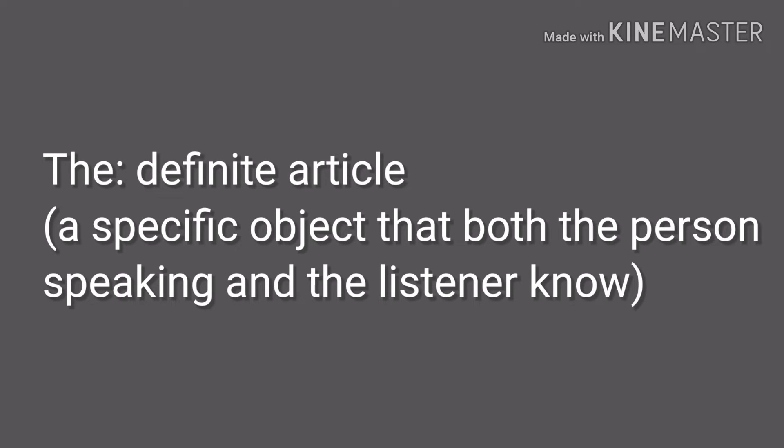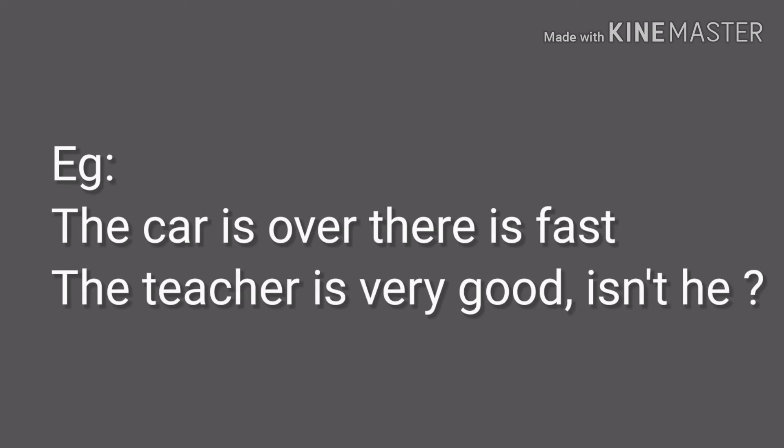Third: the definite article 'the'. It is used for a specific object that both the speaker and the listener already know. Example: 'The car over there is fast.' Both parties know which car. Also: 'The teacher is very good, isn't he?' — both the speaker and listener know which teacher is being referred to.